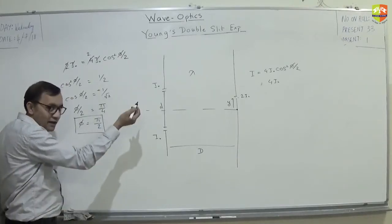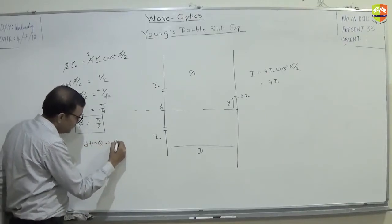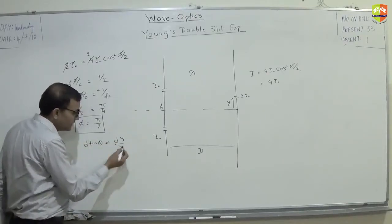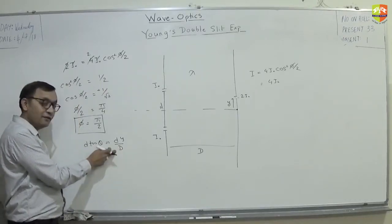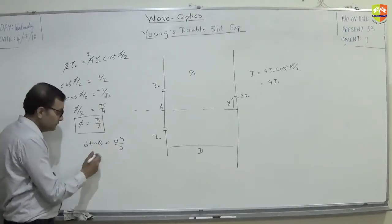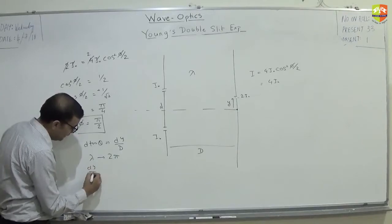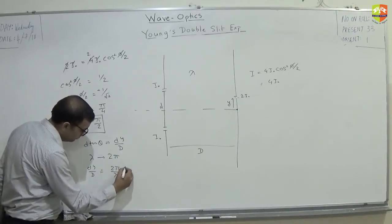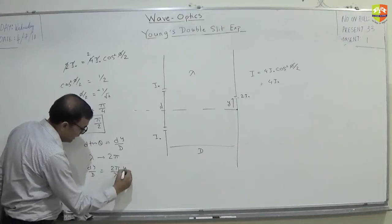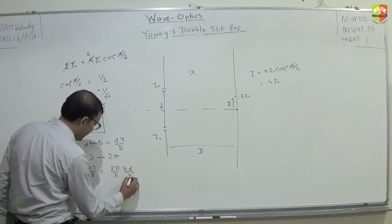At the location y, what is the path difference? d tan theta, it happens to be dy by D. So, this is the path difference at a distance y. Fine. So, what is the phase difference corresponding to this? Lambda corresponds to 2pi. So, dy by D corresponds to 2pi by lambda into dy by D.